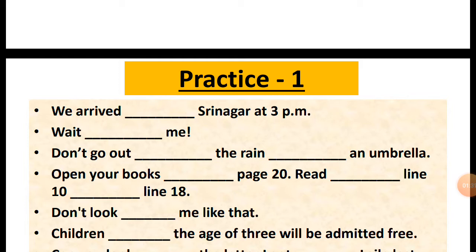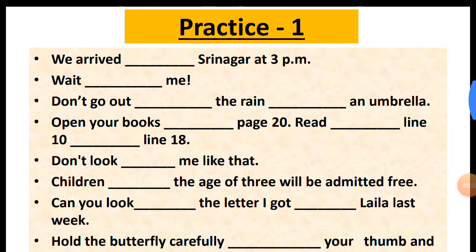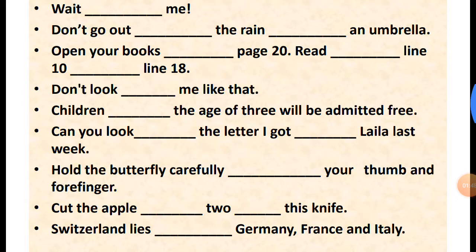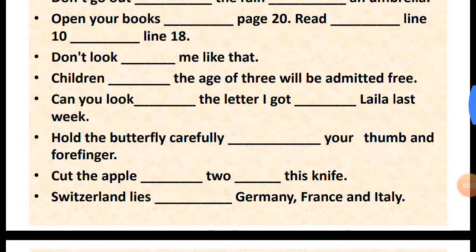Children — dash — the age of three will be admitted free. Can you look — dash — the letter I got — dash — Laila last week? Hold the butterfly carefully — dash — your thumb and forefinger. Cut the apple — dash — to — dash — this knife. Switzerland lies — dash — Germany, France and Italy.